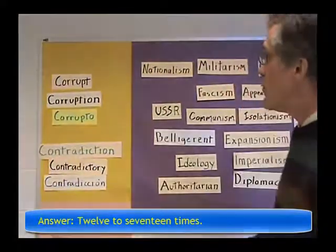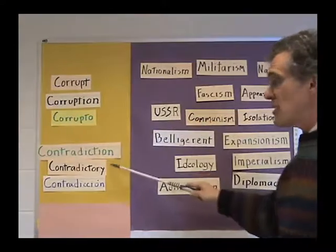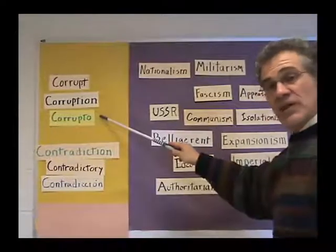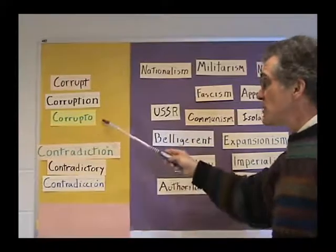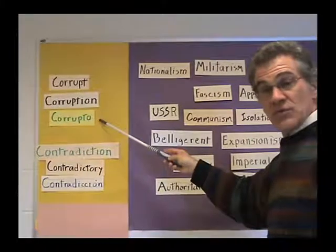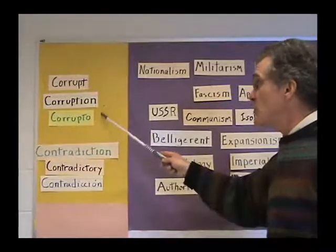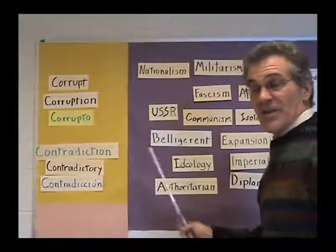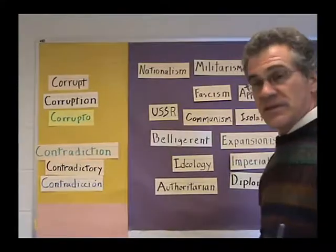Something else to consider is putting different forms of the word together — for example, corrupt and corruption, contradiction and contradictory. Also, if you have ELL students who aren't fully comfortable with English, you could put up translations in the student's native language so they can make a connection that way too — for instance, 'corrupto' for corruption or 'contradicción.' Anything we can do to help students understand vocabulary words is going to be a good thing.